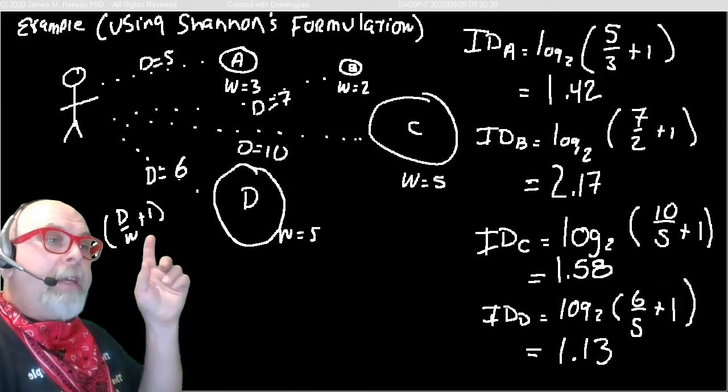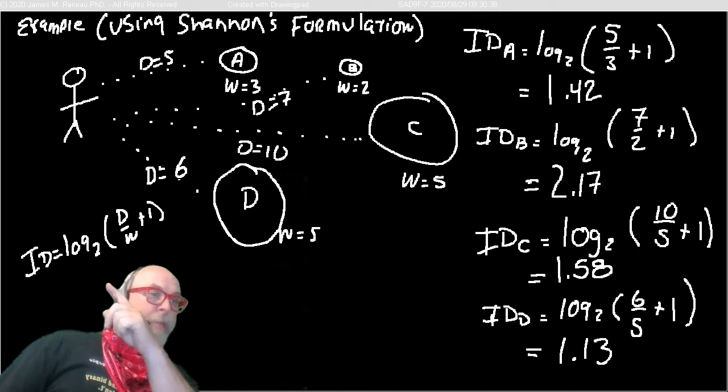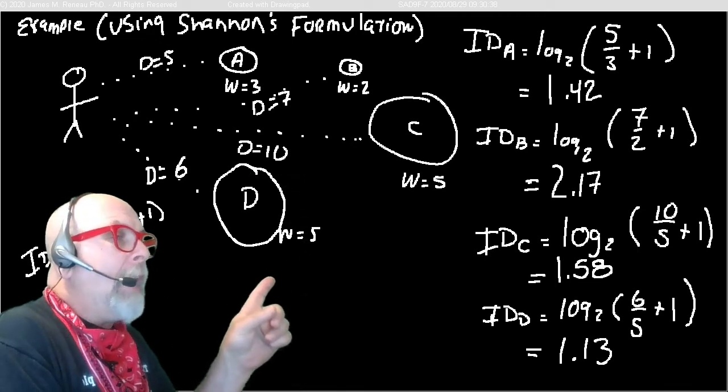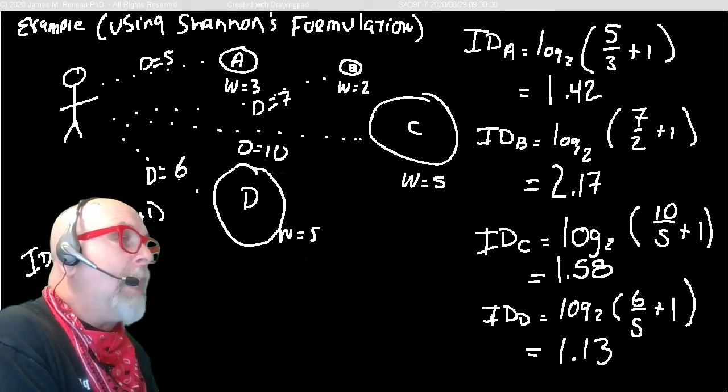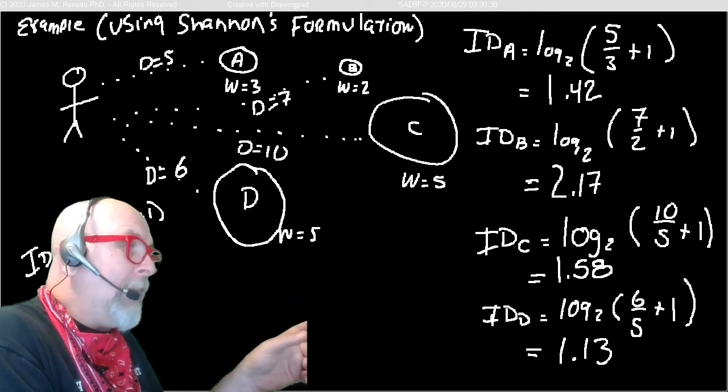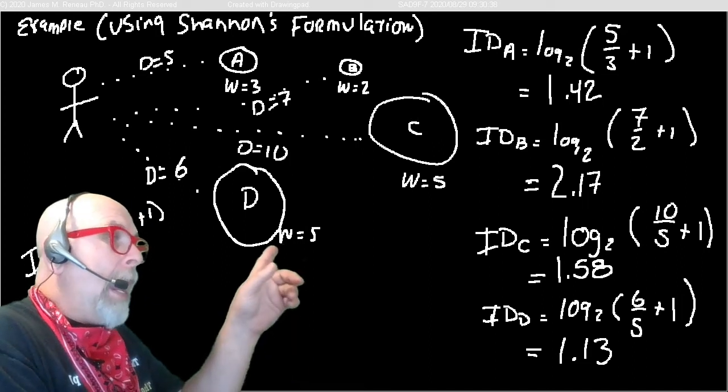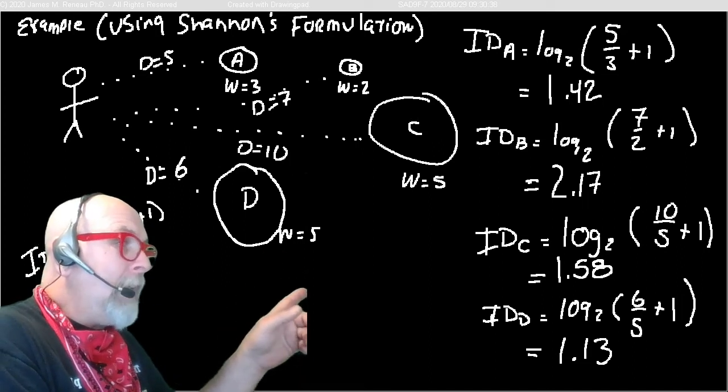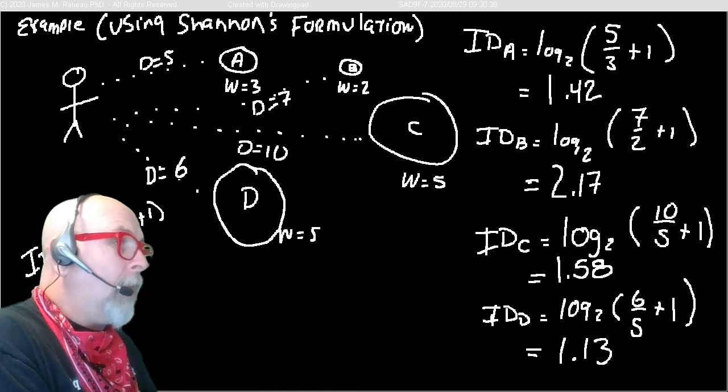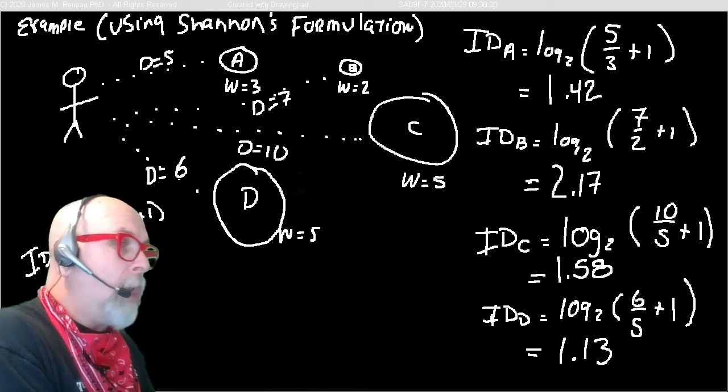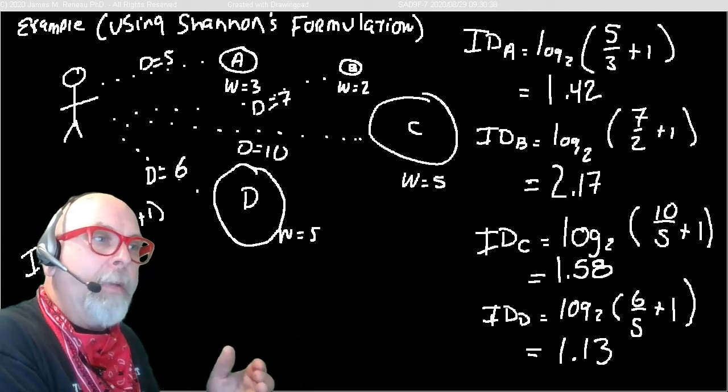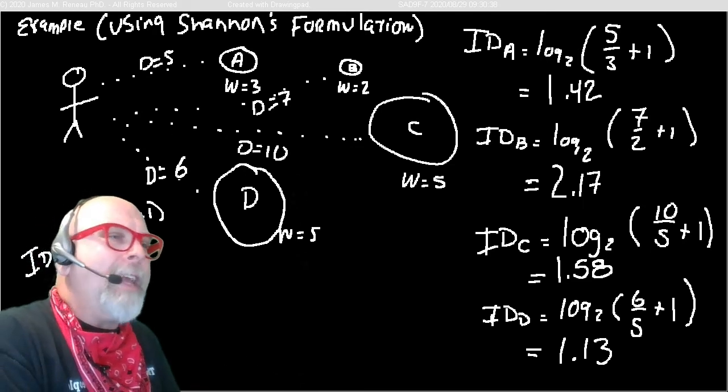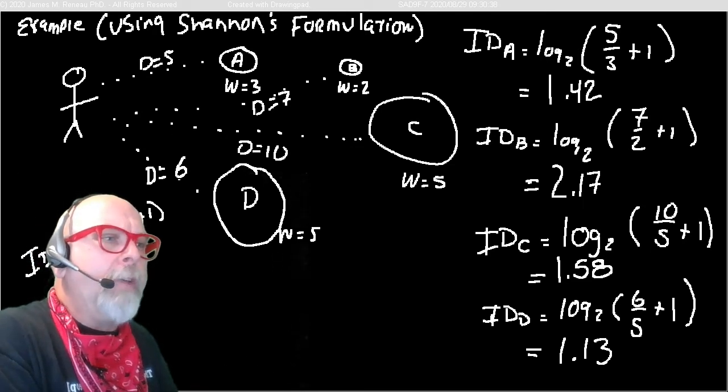So if we have our same example that we did earlier with Shannon's formulation, you can see here, I calculated the index of difficulties for those four objects again. And you can see that Shannon's difficulty of Shannon's index says that D would be the easiest to target. A would be the next easiest to target. C would be the third easiest to target. And B would be the slowest to target. Now this number doesn't actually represent a specific time. It doesn't represent a value.